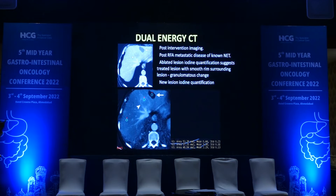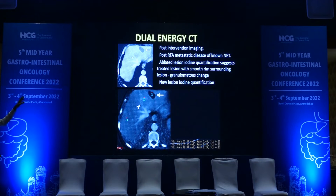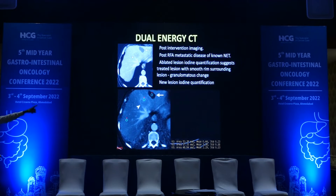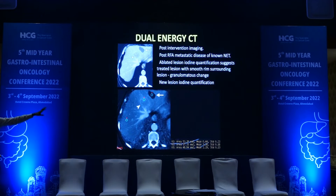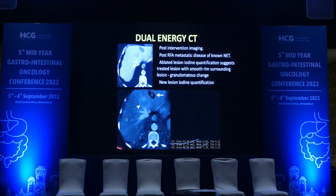Coming to the role of dual energy CT in metastasis: in the first image there is a post-ablation cavity and another heterogeneous area of enhancement that is not confidently visible on conventional CT. However, on the iodine mapping — on the lower image there is less iodine uptake in the primary lesion (arrow), maximum iodine uptake in the arrowhead image, and normal homogenous iodine uptake within the liver parenchyma. So with dual energy CT you can differentiate the post-ablation cavity, a fresh lesion, and normal parenchymal enhancement.